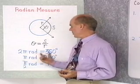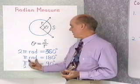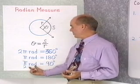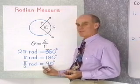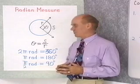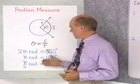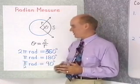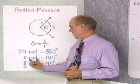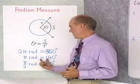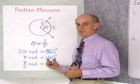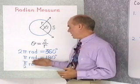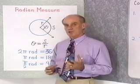Dividing both by 2, we get π radians equals 180 degrees. π over 2 radians would be half of that, or 90 degrees. These are our basic conversions between radians and degrees. We'll use the relationship π radians = 180 degrees most often — one is in radian measure and one is in degree measure.